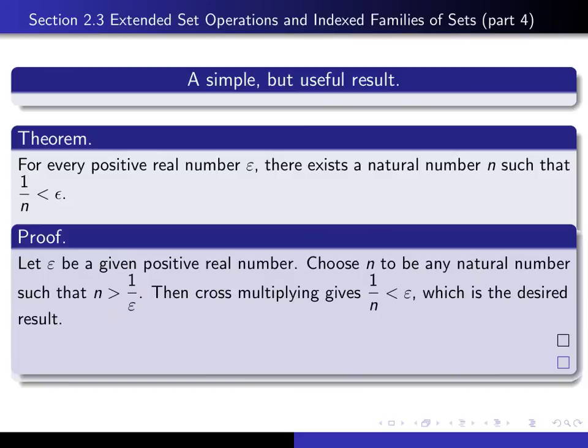Then cross-multiplying gives 1 over n smaller than epsilon. That's the desired result. And that completes the proof.